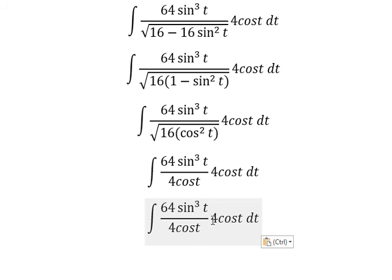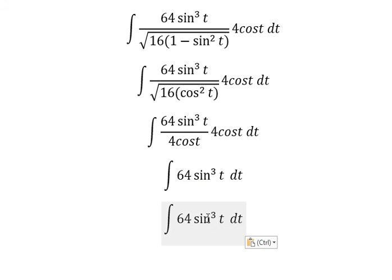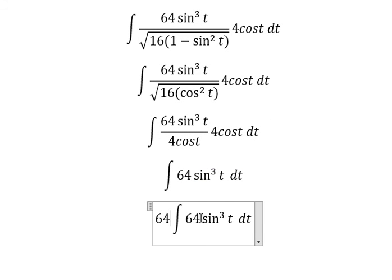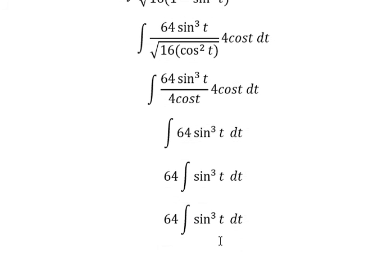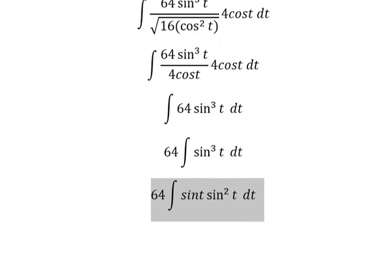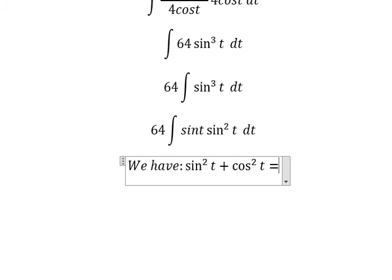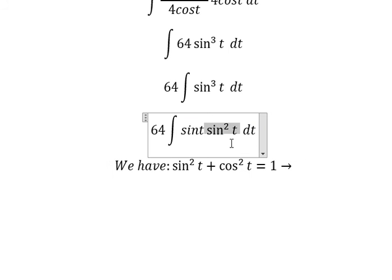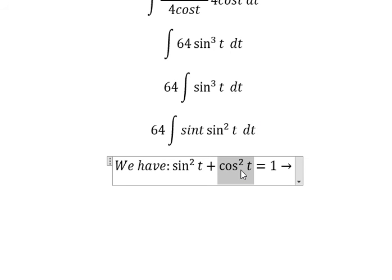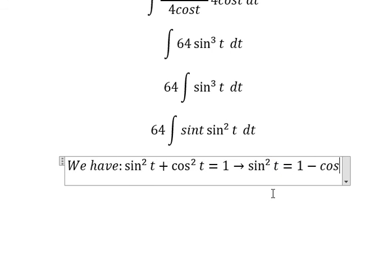And now we simplify: 4 cosine t cancels with 4 cosine t. So 64, I will put outside. This one I can put as sine t times sine squared t. Next we have the formula sine squared t plus cosine squared t equals 1. So we have sine squared t, so I will put cosine squared t to the right, and now we have sine squared t equals 1 minus cosine squared t.